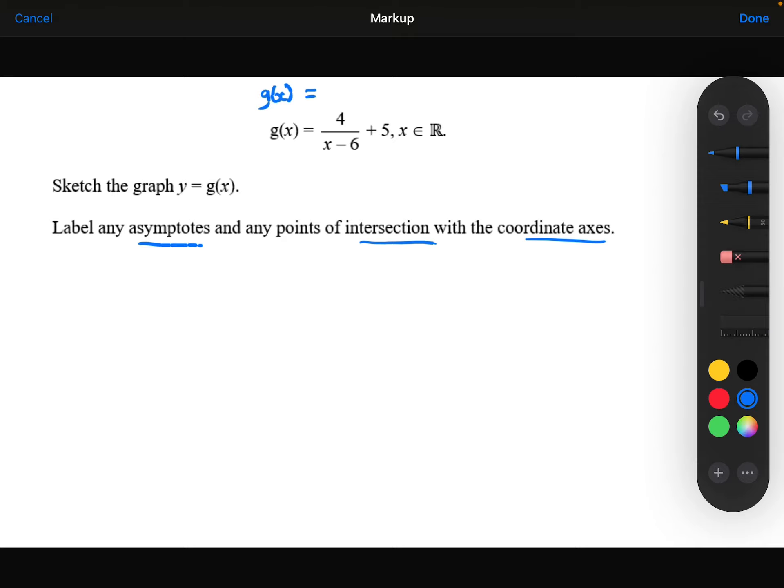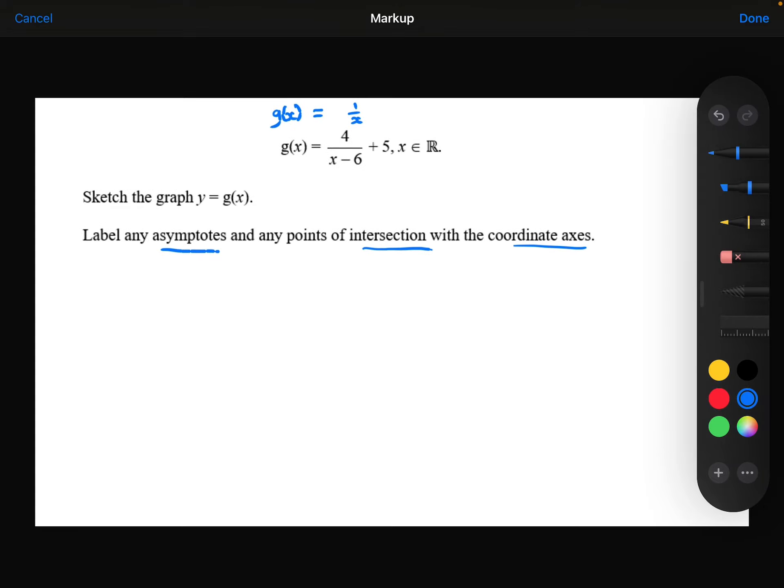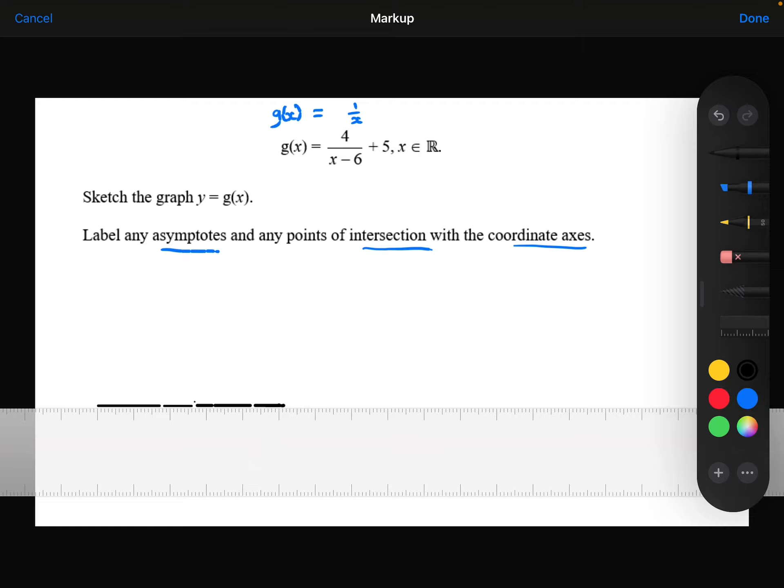I'm going to think of g of x as being some sort of transformation of the 1 over x graph. First of all, I know the 1 over x graph would look... Let me draw some axes first.